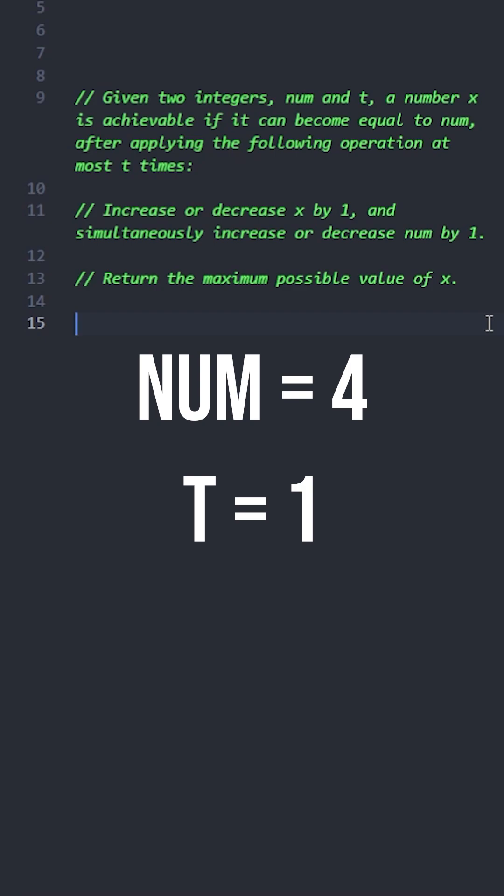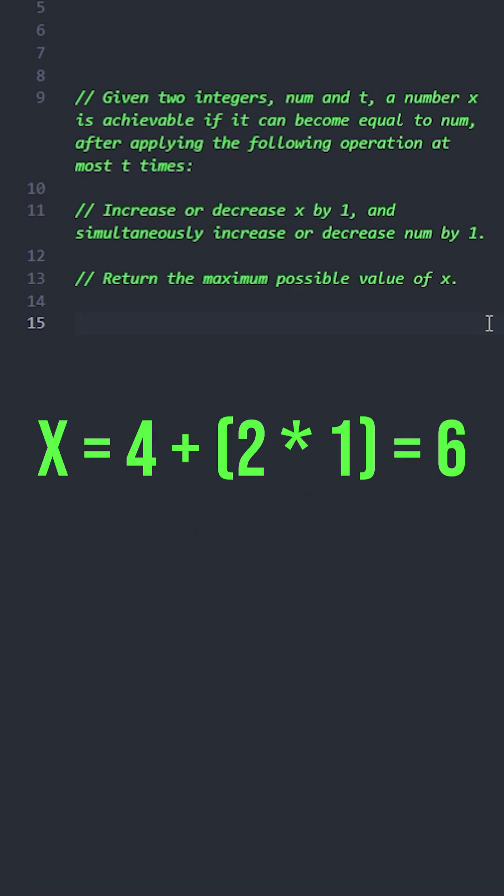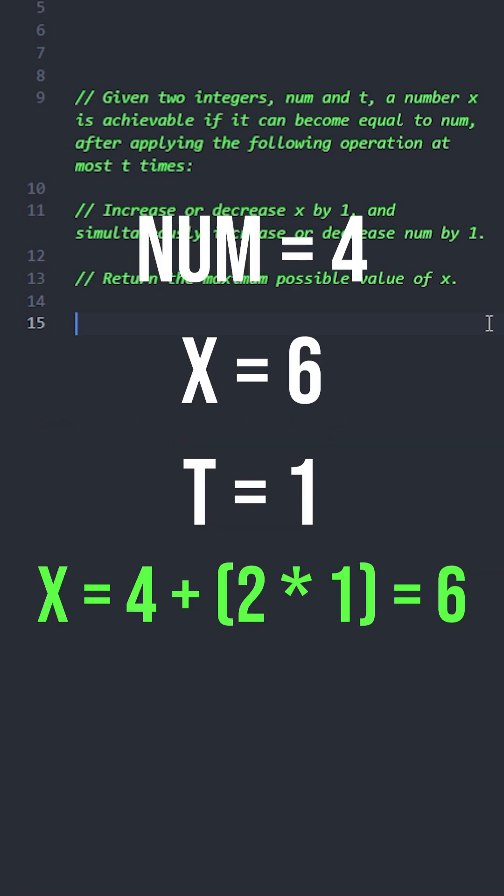So with t equals 1 operation starting with num equals 4, the result looks like this: if x starts at 6 and num at 4, in one operation we decrease x to 5 and increase num to 5, making them equal. We learned that since each operation can close the gap by 2 units and we need x and num to become equal within t operations, the maximum initial gap between them can be 2 multiplied by t.